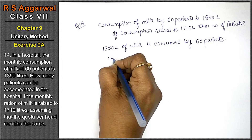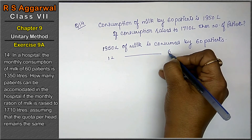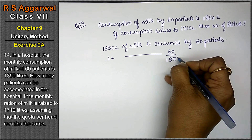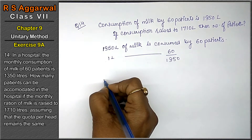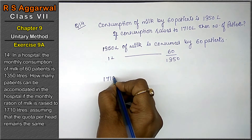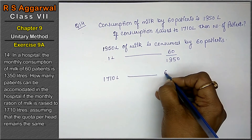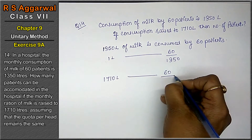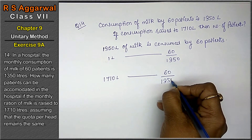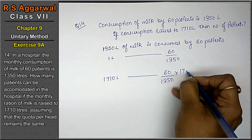That means 1,350 liters of milk is consumed by 60 patients. So 1 liter of milk can be consumed by 60 upon 1,350 patients. Then 1,710 liters of milk can be consumed by 60 upon 1,350 into 1,710 patients.